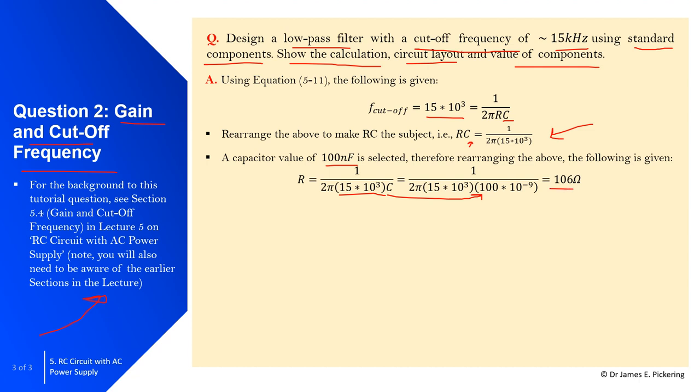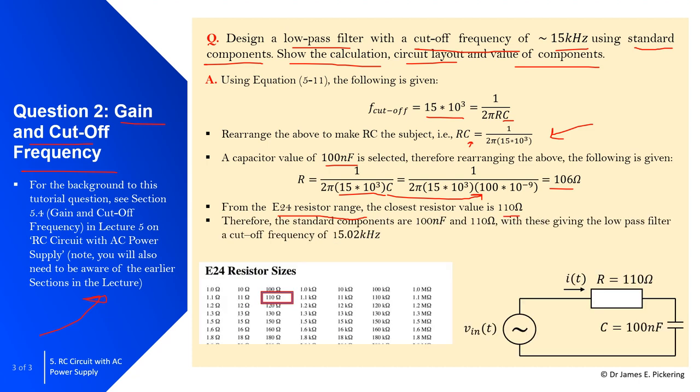I need a resistor value of around 106 ohms. Looking at the E24 resistor range, the closest value is 110 ohms. So I've selected 110 ohms for the resistor and 100 nanofarads for the capacitor. This is my designed low-pass filter.